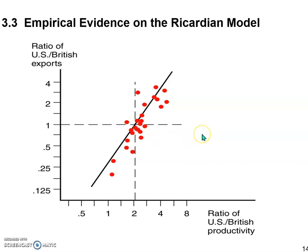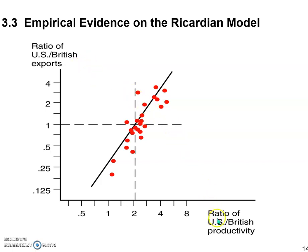With these 26 red dots on the graph, we can draw a trend line or regression line, and there is a very strong positive correlation between the two variables. In other words, the evidence says the US tends to export more to the rest of the world than the UK does in industries where the US has relatively higher labor productivity — the more productive the US in an industry, the more it exports.